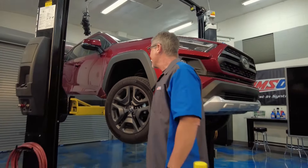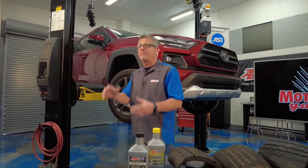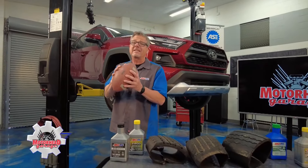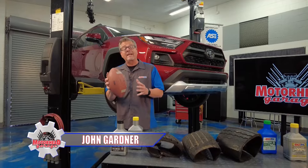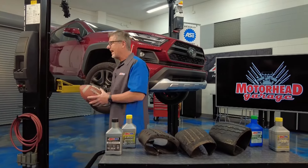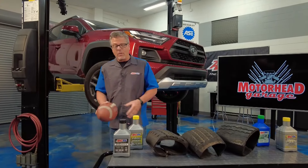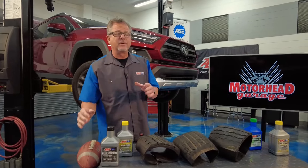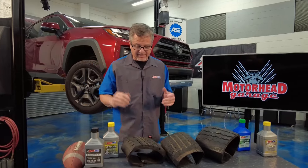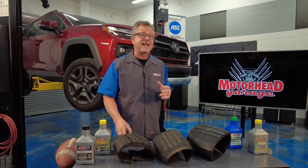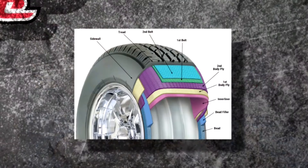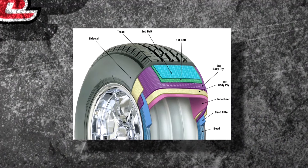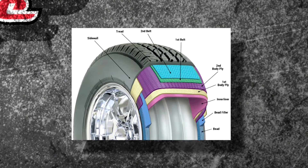235 55 R19 — sounds like a quarterback cadence but it's actually a tire size. Welcome to this AMSOIL tech tip; we're talking about tire sizes and tire designations.